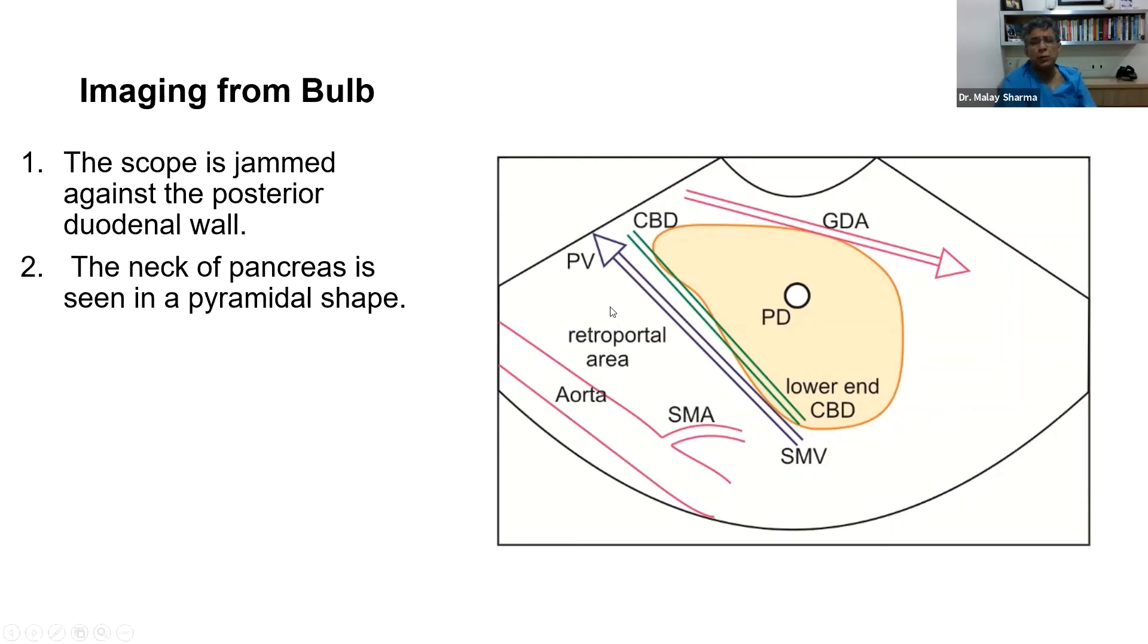I should mention the name of Palazzo. This is the retro-portal area. This is mentioned mainly by Palazzo, although many people now know it as surgeons define it, because if there's a lymph node here in gallbladder cancer or in pancreatic cancer, this is a bad sign because the lymph node is far away and inoperable.